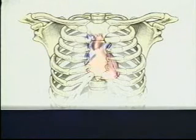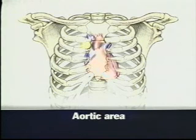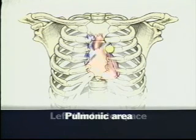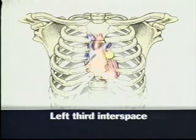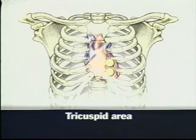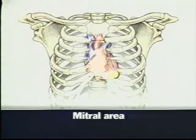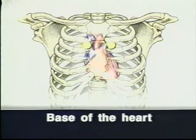You can hear S1 and S2 in the aortic area in the right second interspace close to the sternum, the pulmonic area in the left second interspace close to the sternum, the left third interspace, the tricuspid area in the left fourth and fifth interspaces, and the mitral area at the apical impulse. The aortic and pulmonic areas together are sometimes called the base of the heart.